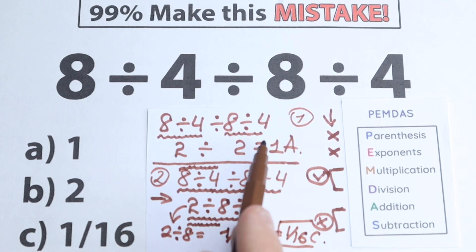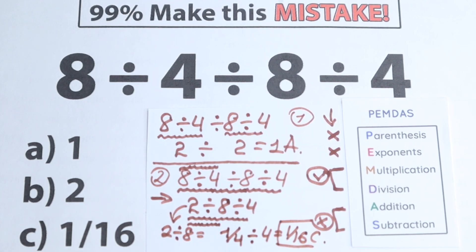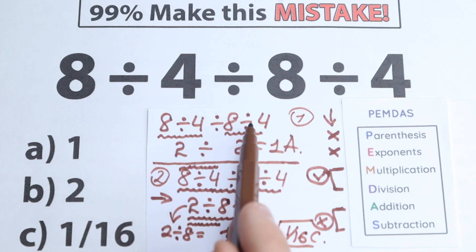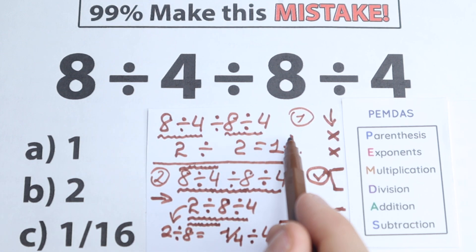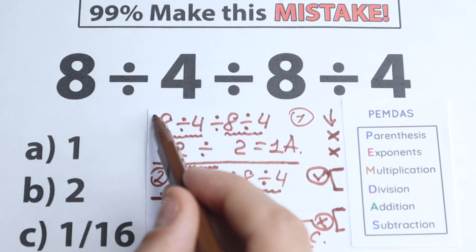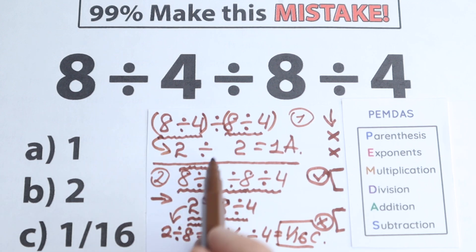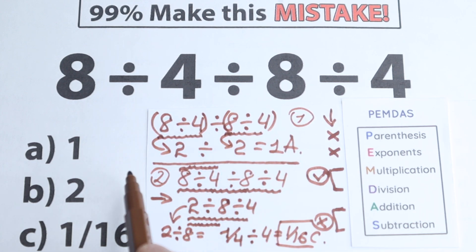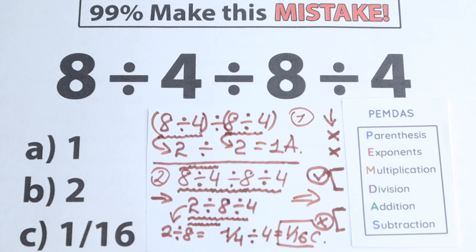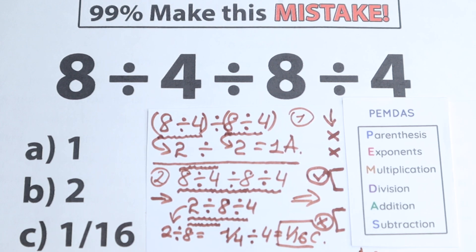So we have two answers: Option A (which is 1) and Option C (which is 1/16). Many of you probably chose Option A, but that approach incorrectly jumps around rather than going left to right. If there were parentheses it would be correct, but there are no parentheses here, so we reject Option A. Option B is also incorrect. According to the correct order of operations — left to right — the correct answer is Option C: 1/16.